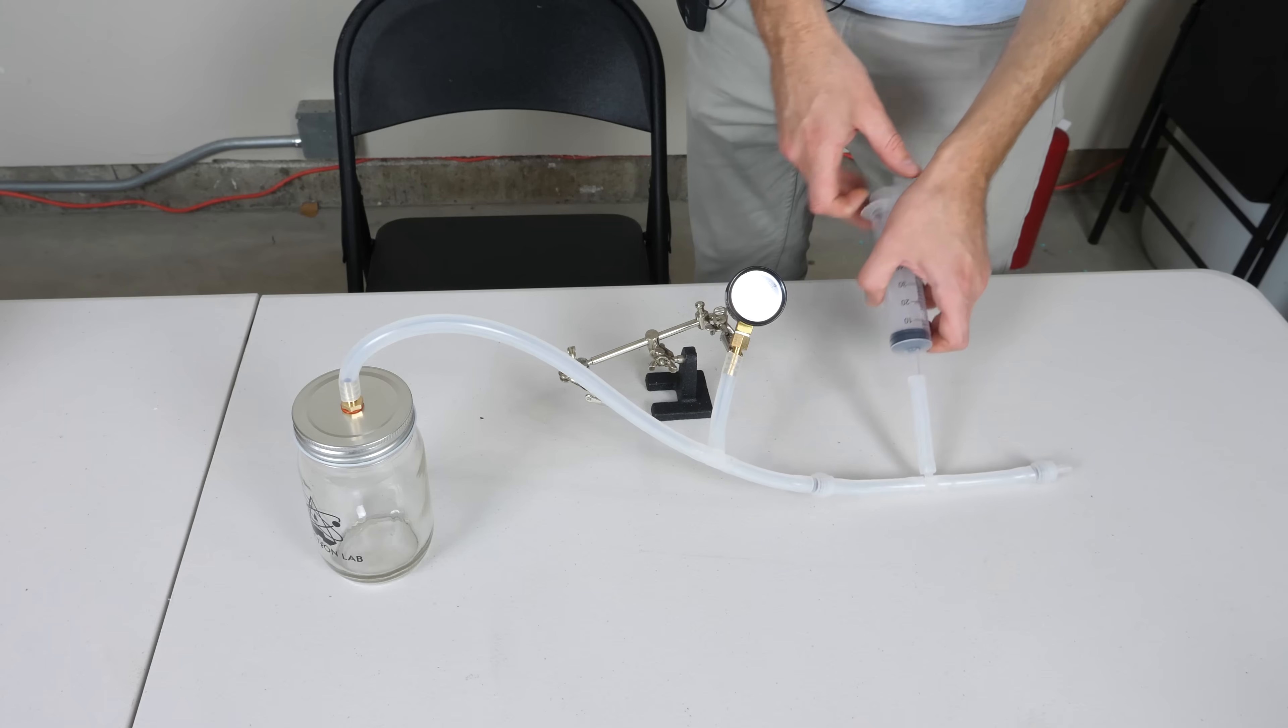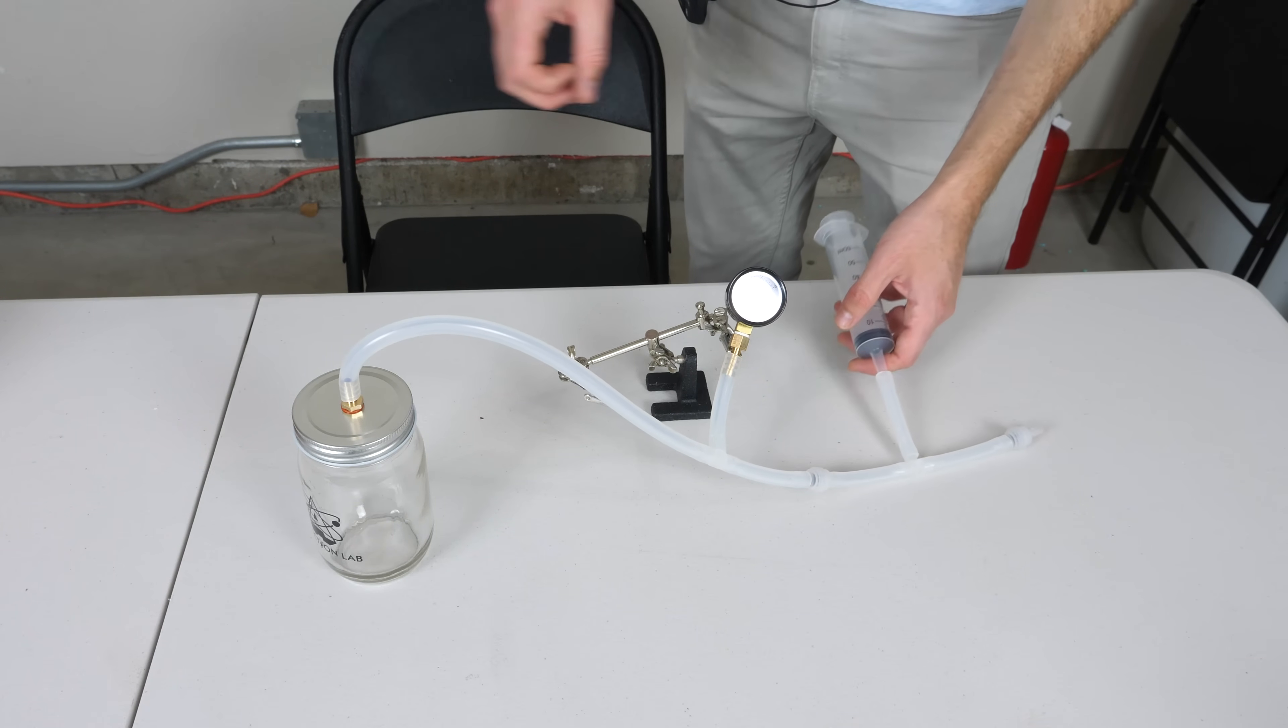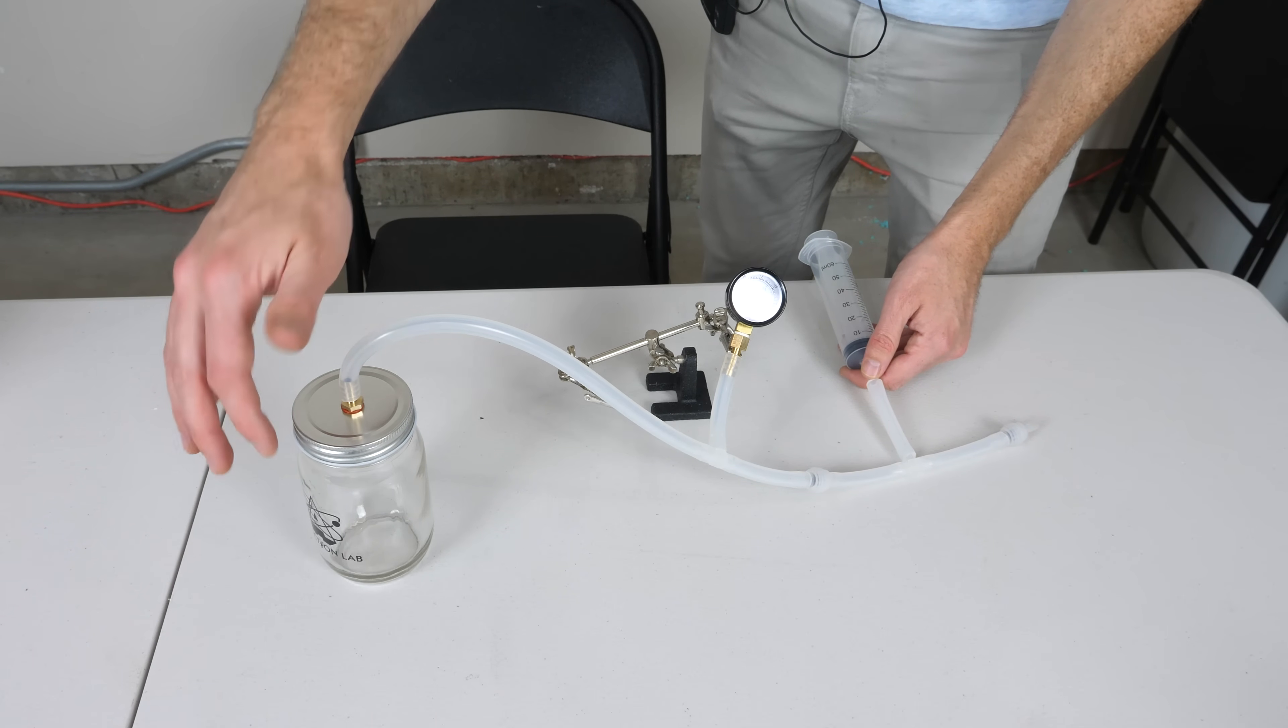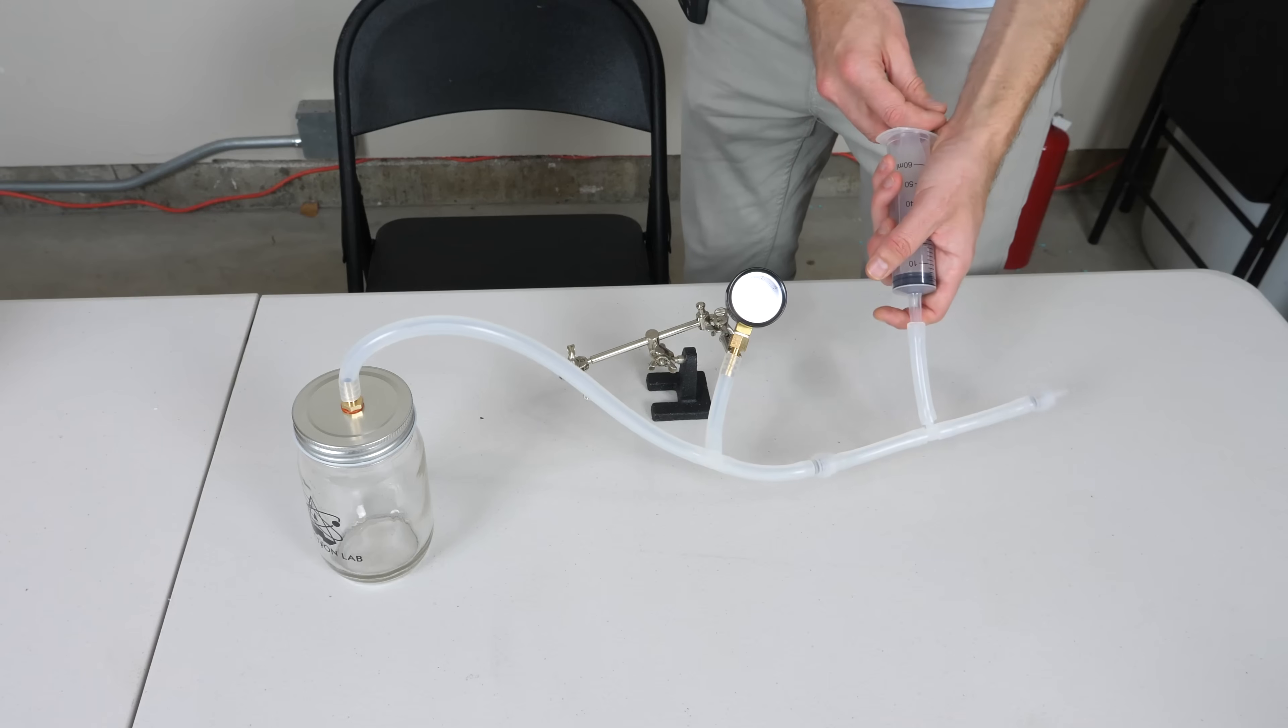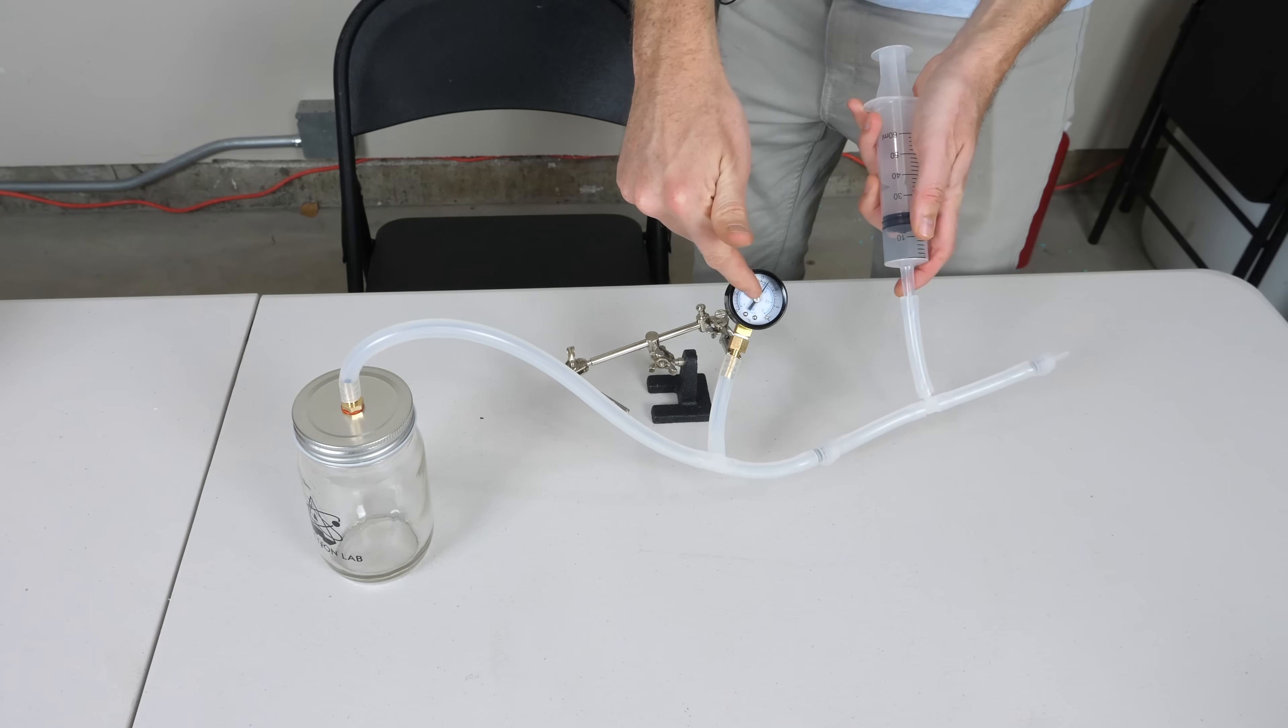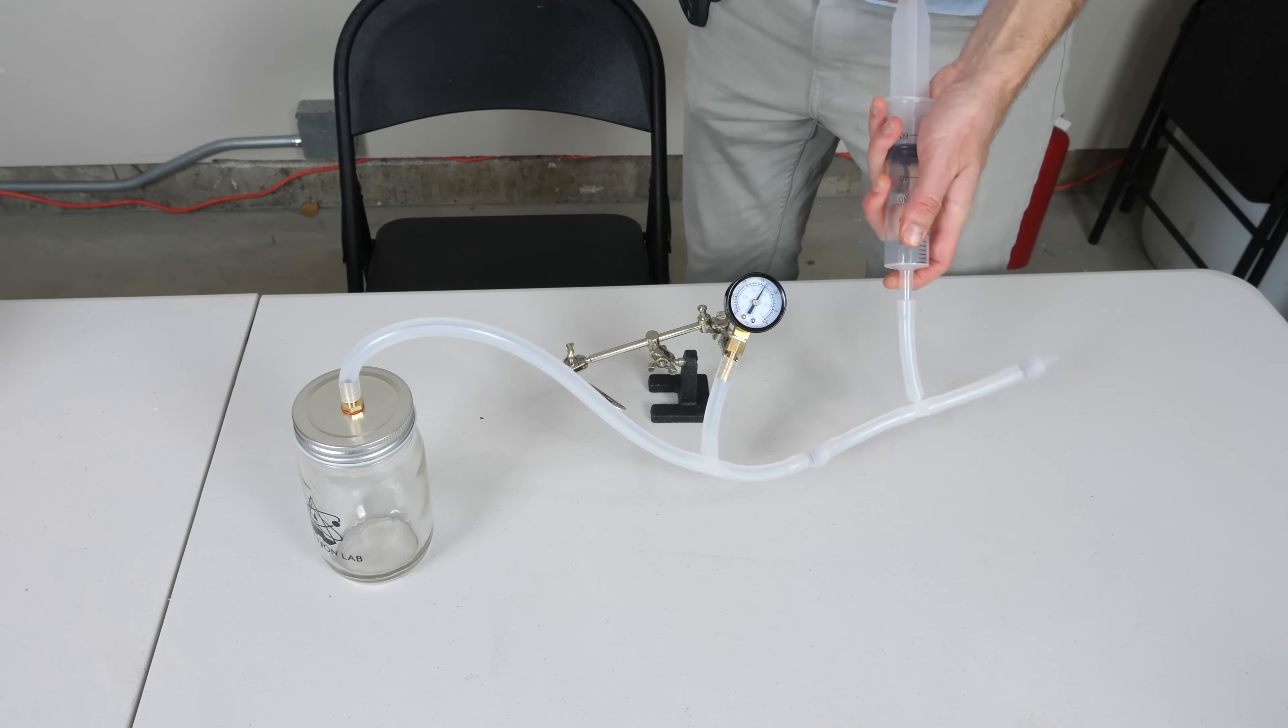Once your vacuum chamber is fully assembled, you can vacuum it out. Put one of your experiments in here, whether it be the marshmallow, the balloon, or the shaving foam, and then you can vacuum it out. You'll see that it should easily start to go down. The pin should start to go down with each pump.